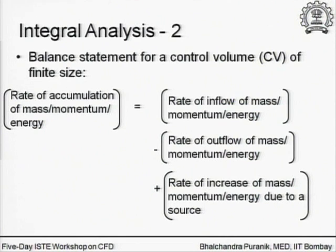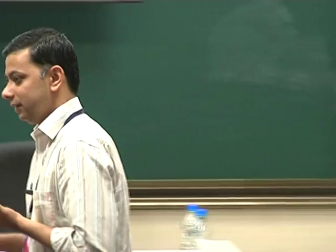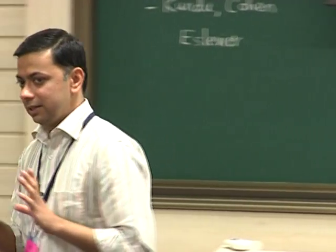Rate of accumulation of mass in your control volume, which will be called CV from now on, is quite obviously how much is coming in minus how much is going out, plus if there is some sort of generation happening — what I will call a source. If you are talking about a mass balance, is there any sense in talking about a mass source? We are talking about generation or creation of mass. Unless something very special is happening in your control volume, such as nuclear reactions, we are not going to destroy or create mass.